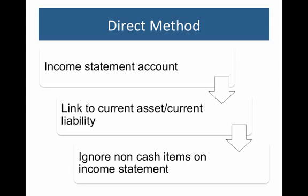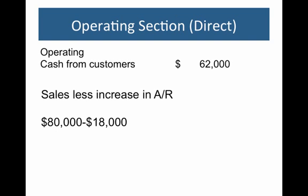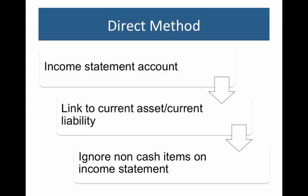We can figure out the same section using the direct method. In this case, we start with the top of the income statement — sales, then cost of goods sold, then all of the expenses. We go line by line through those. If we come to a non-cash item, we just skip over it and ignore it. We take our sales and link them to any current assets, cost of goods sold to any current assets or current liabilities they're linked to, and check whether payables are linked to any other expenses. Line by line, we do that on our statement.